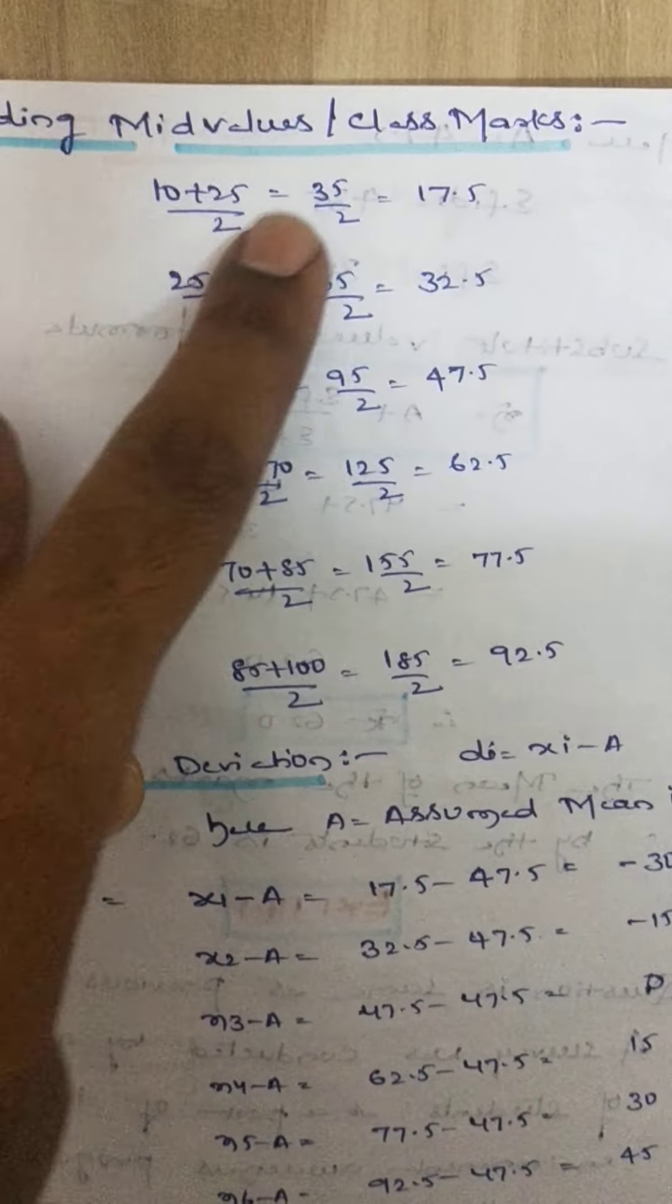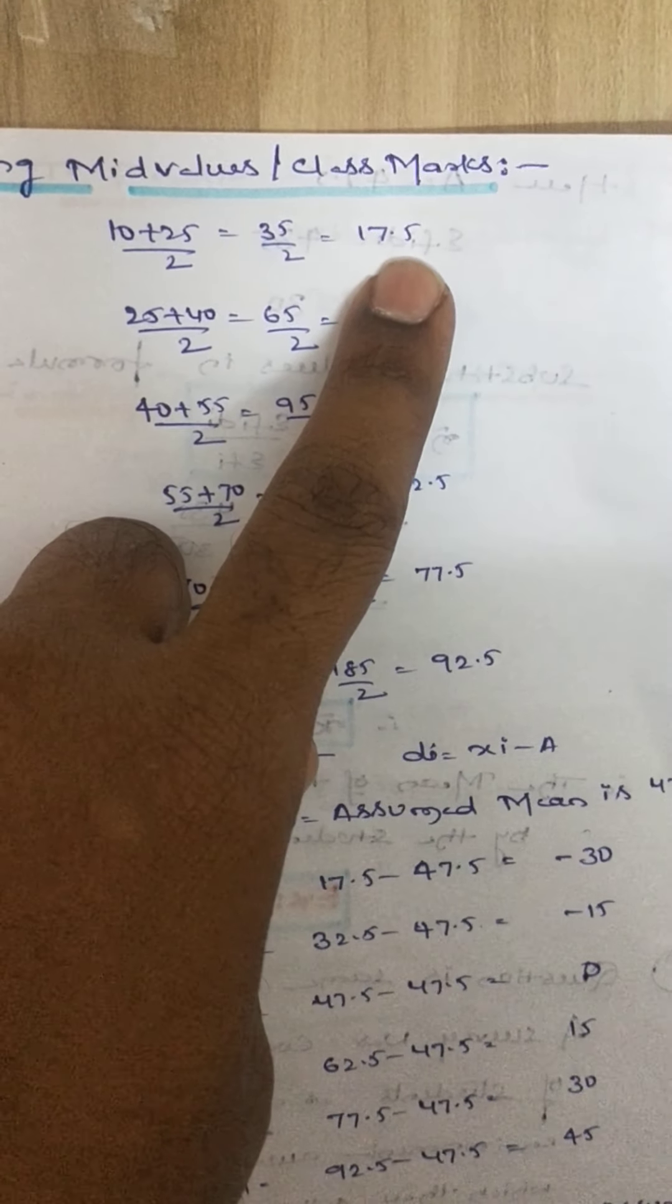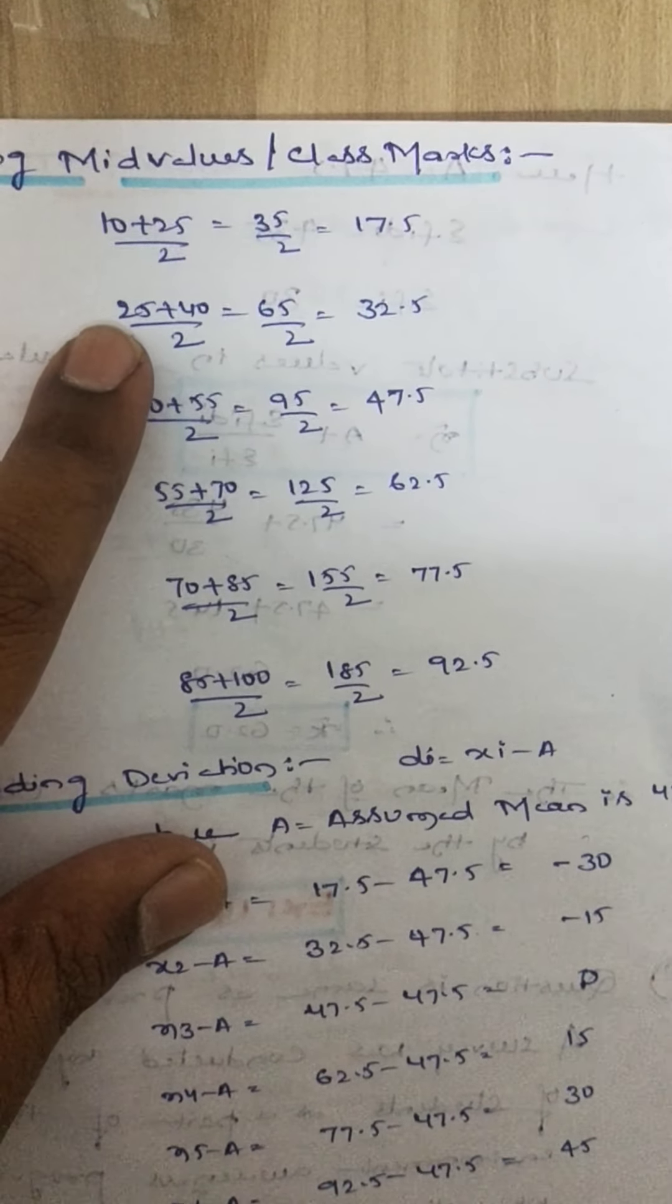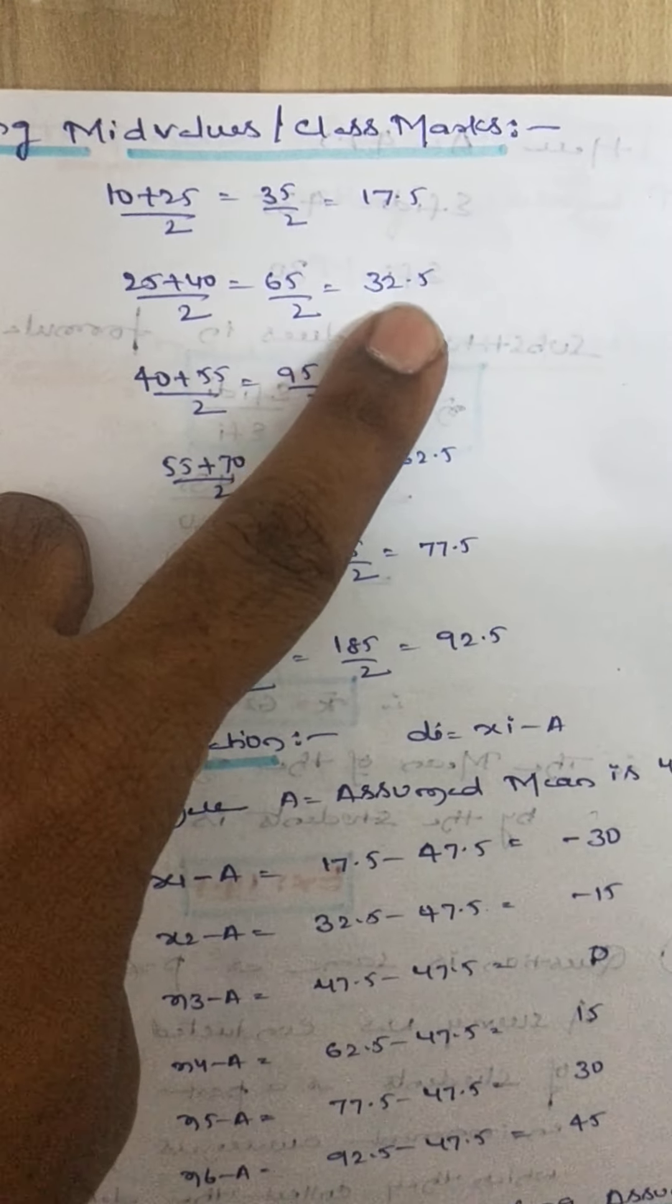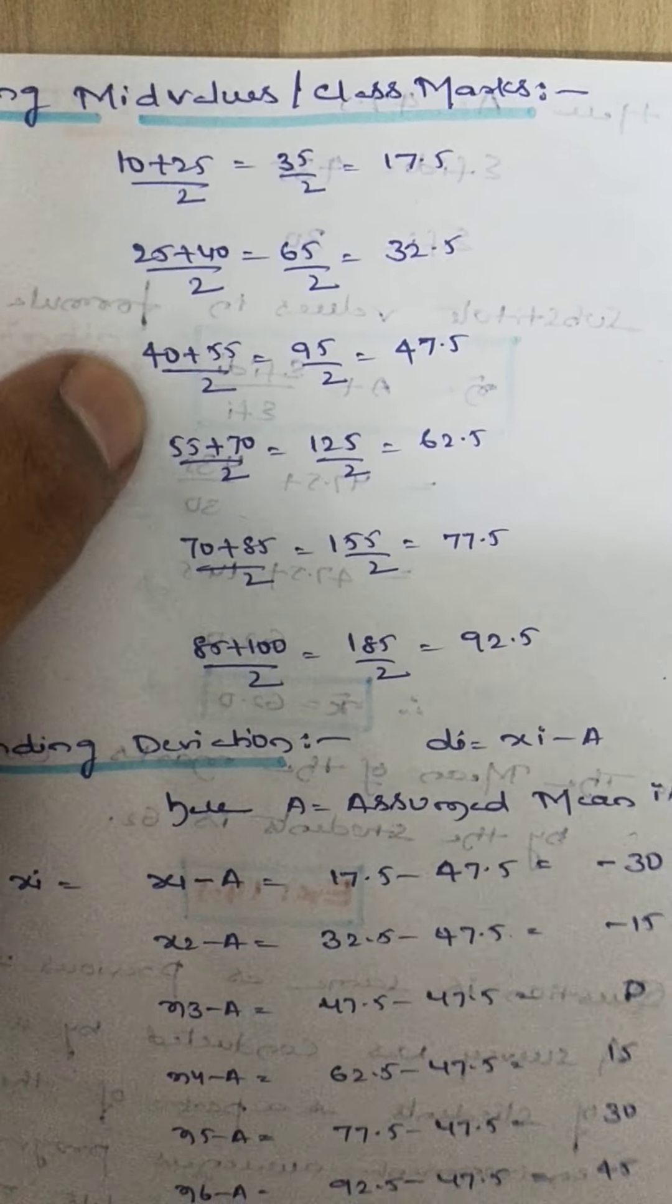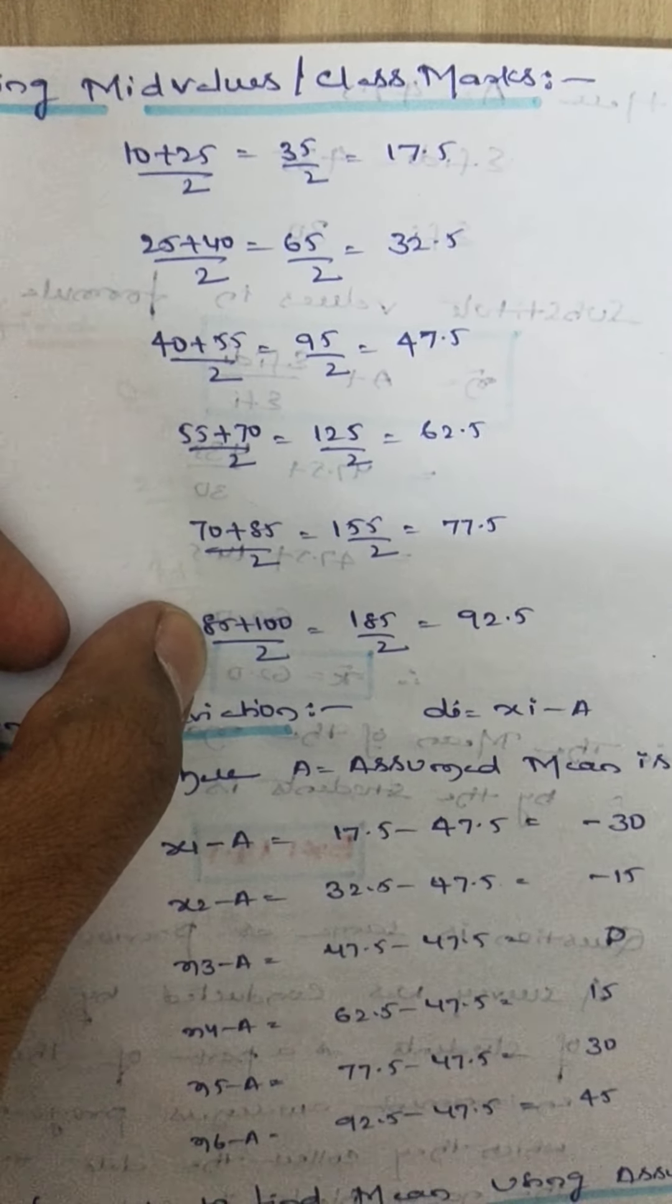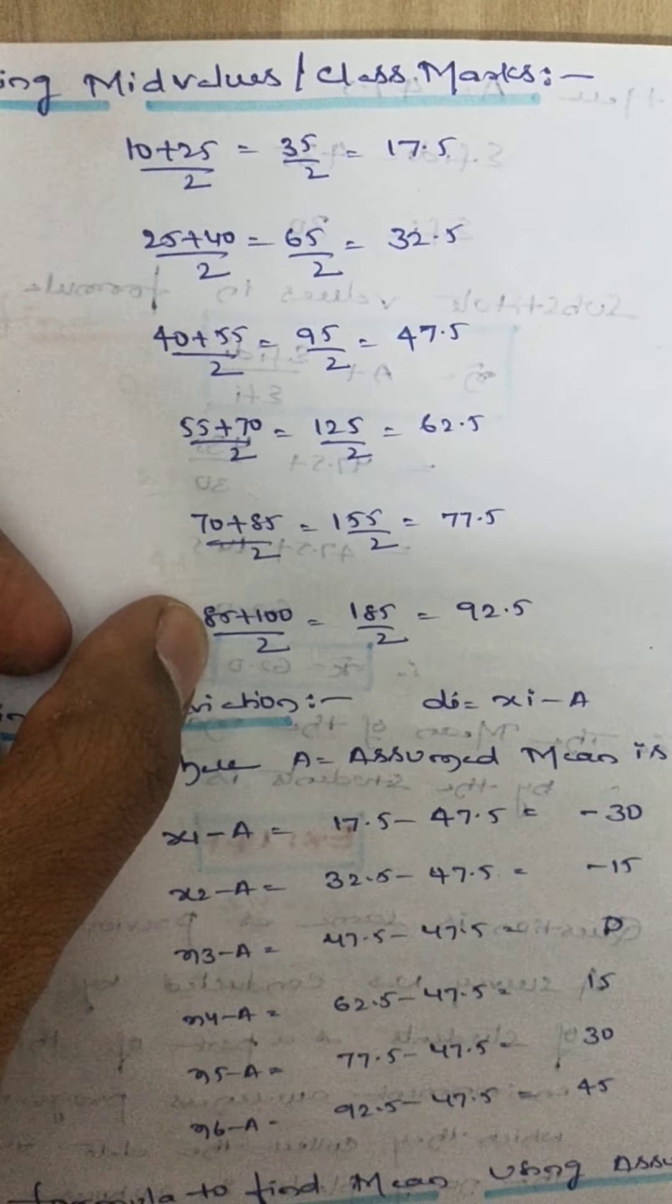So 10 plus 25 by 2 is 35 by 2, we get 17.5. Second one, 25 plus 40 by 2 is 65 by 2, we get 32.5. Like that you have to calculate all the mid values for the given class interval.